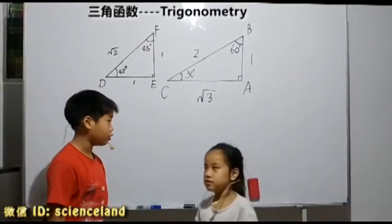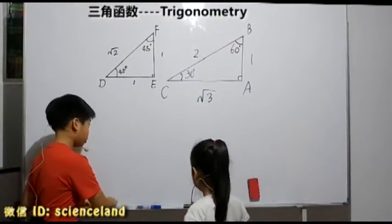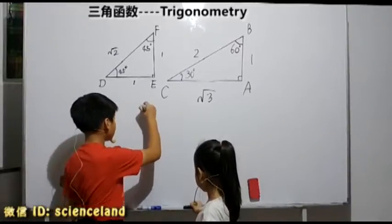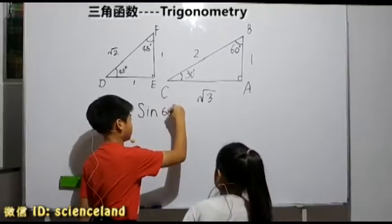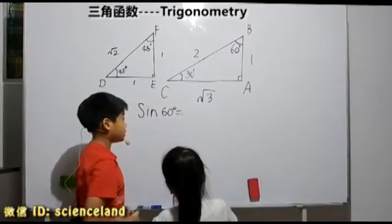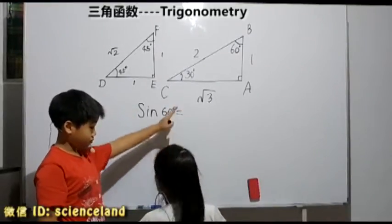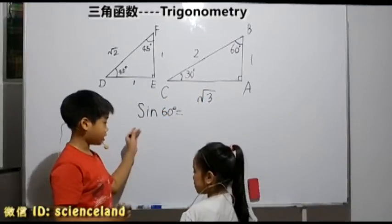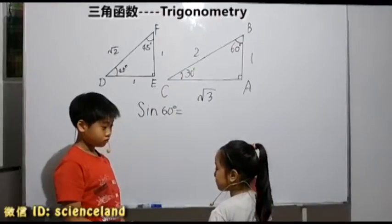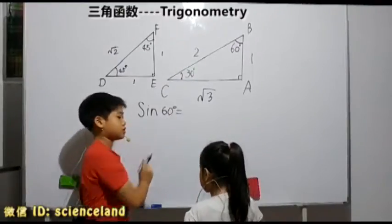Now we'll find sin 60 degrees. 60 degrees is at point B, right? Sin is opposite over hypotenuse. Yes, so can you find this?